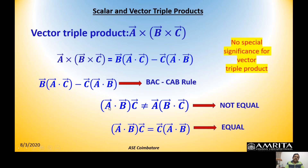The vector triple product follows what is well known as the BAC-CAB rule: A × (B × C) = B(A · C) − C(A · B). To remember it — when you hire a cab you sit in the back — 'back minus cab.' Also note: [A · B] · C is not equal to A · [B · C]; however, because of the commutative rule, (A · B) times vector C does equal (B · A) times vector C, since the dot product gives a scalar multiplier.